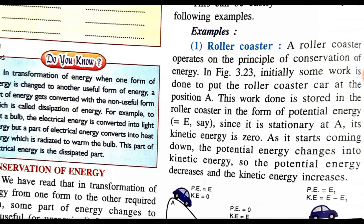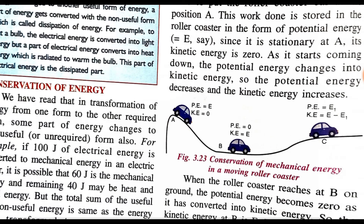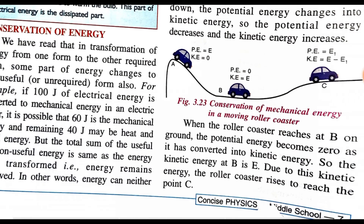Roller coaster: a roller coaster operates on the principle of conservation of energy. Initially, some work is done to put the roller coaster car at position A, storing energy as potential energy. When the roller coaster is stationary at A, it has potential energy and its kinetic energy is zero. When it starts to move, the potential energy changes into kinetic energy — potential energy is reduced and kinetic energy increases. When the roller coaster reaches point B, the potential energy will be zero and all energy is kinetic.